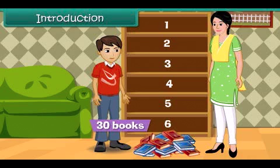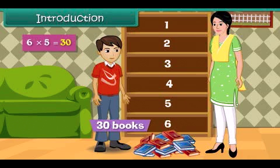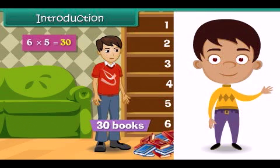It is easy if Ram knew division. He has 30 books and six sections, so each section will have five books. Simple, isn't it? Do you want to learn how this is done? Let us together find this out.